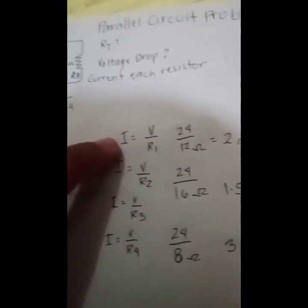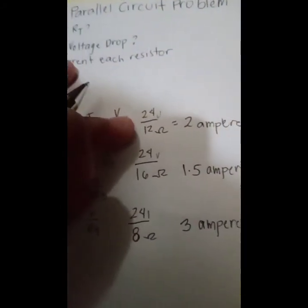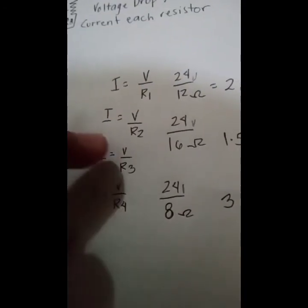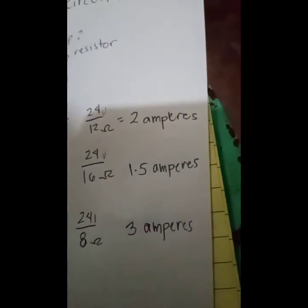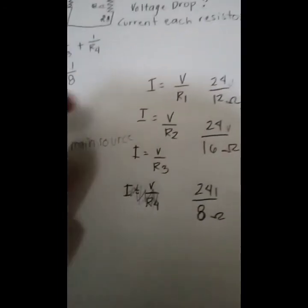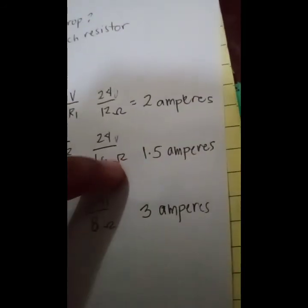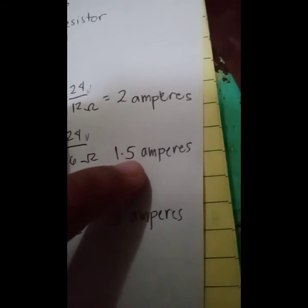For resistor 1: 24 volts over 12 ohms gives us 2 amperes. For resistor 2: 24 volts over 16 ohms gives us 1.5 amperes.